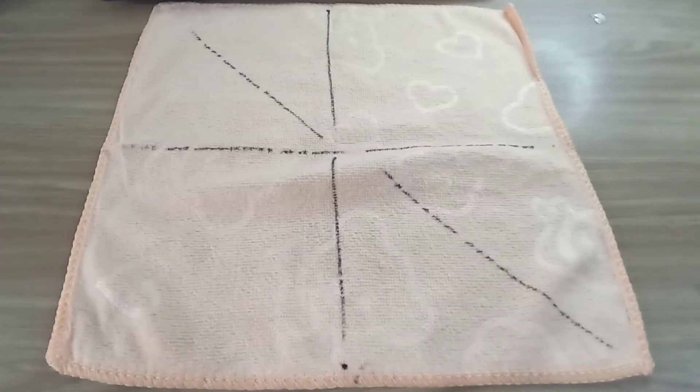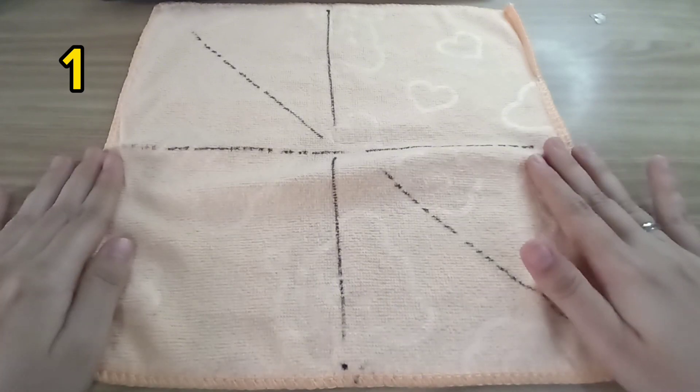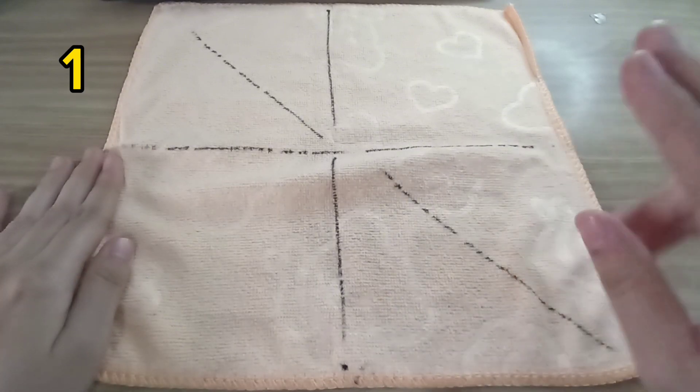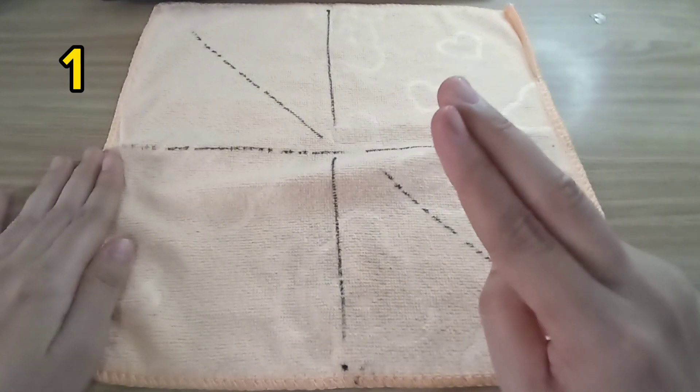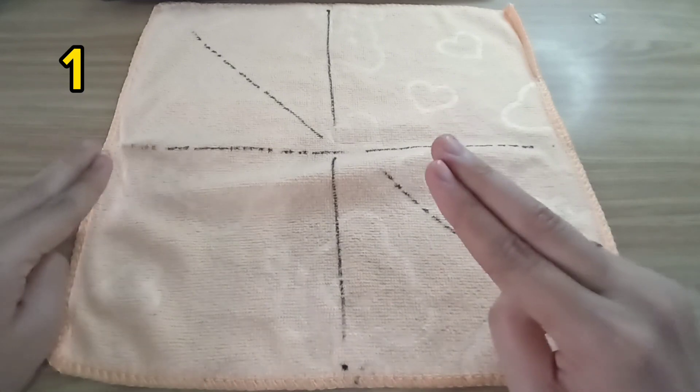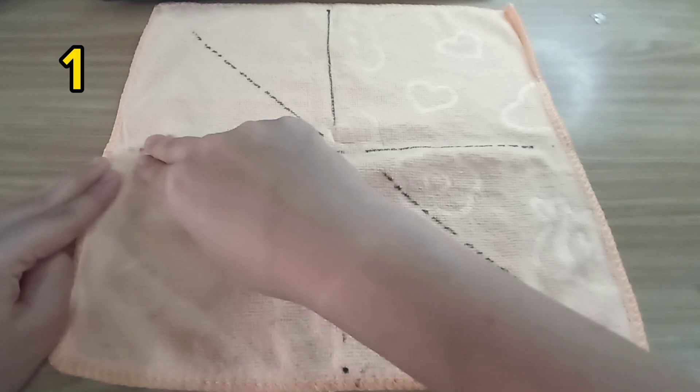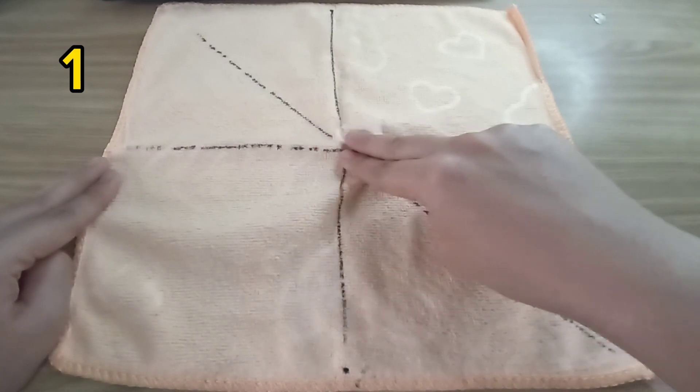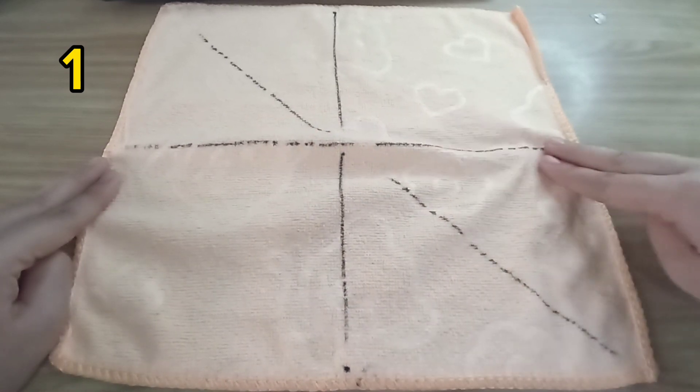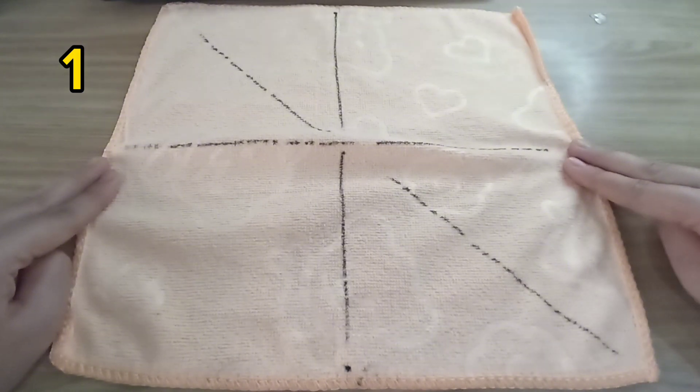Okay children, the first one. Let's put your napkin on the table and show me your two fingers. Trace the horizontal line or sleeping line. We are going to fold into a half.